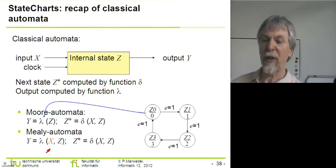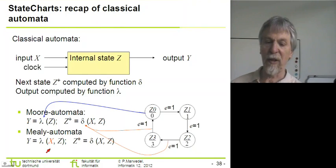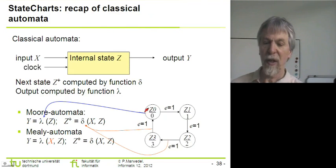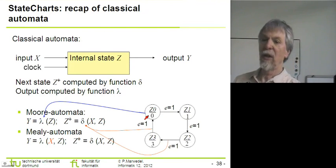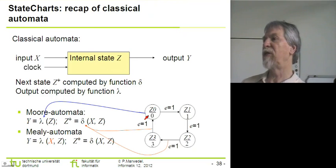These finite state machines are typically described in state diagrams. In this case we are representing a Moore automaton, which means we can indicate the output already for each state because the output is just a function of the states.